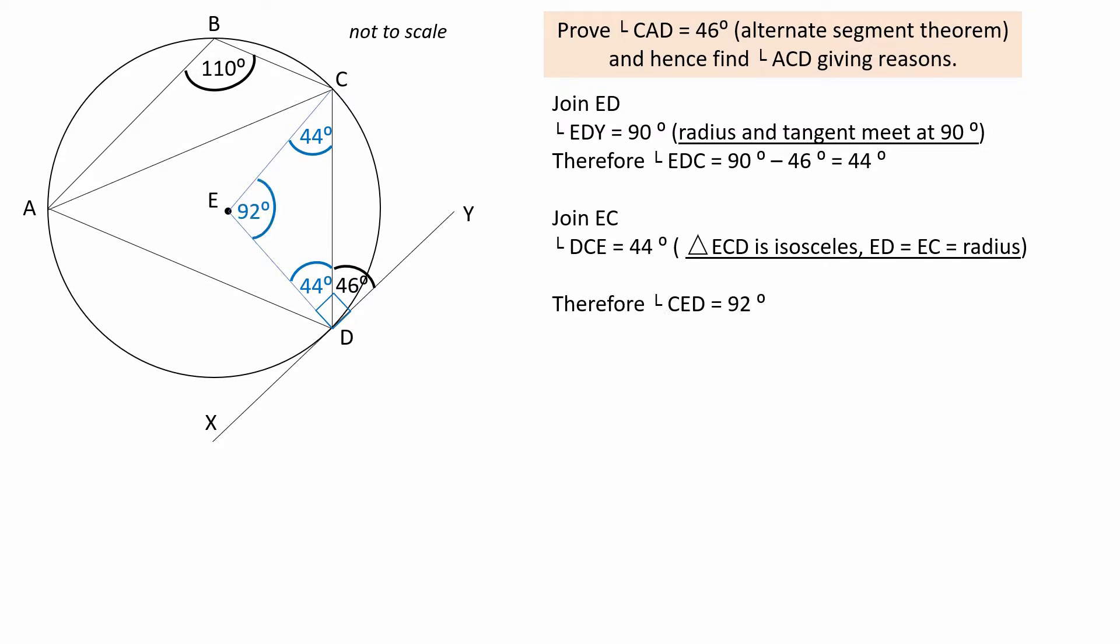Now calculate the third angle of the triangle, angle CED, which is 180 minus the sum of the other two angles, which is 92 degrees. And give the reason, angles of a triangle add to 180 degrees.